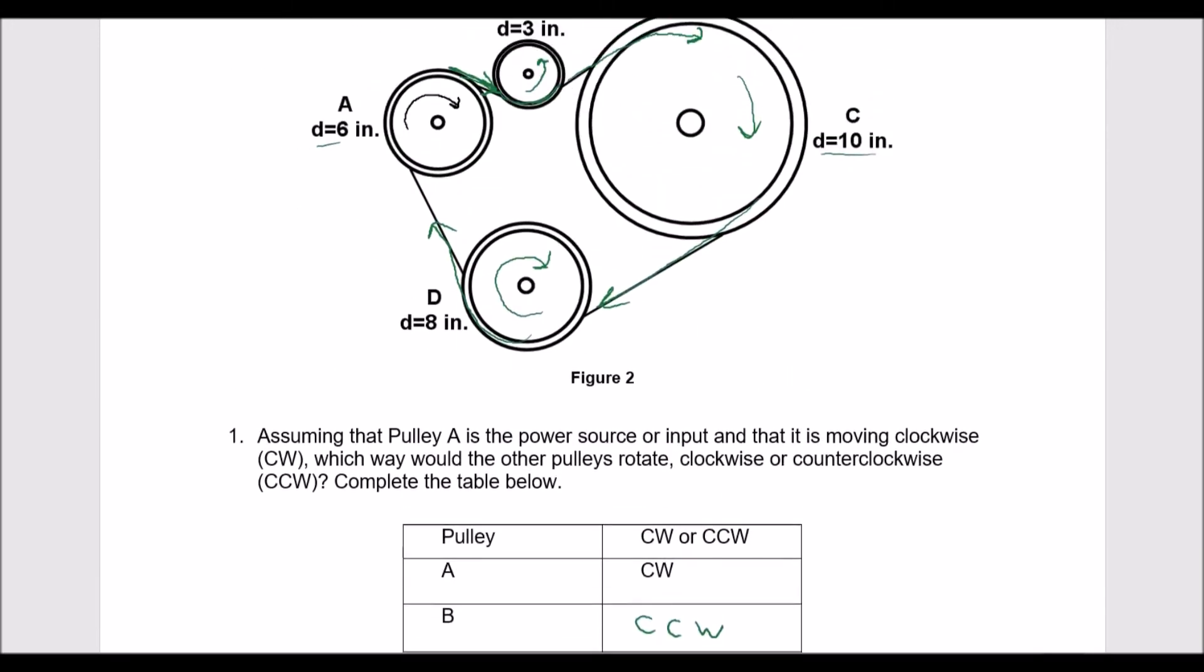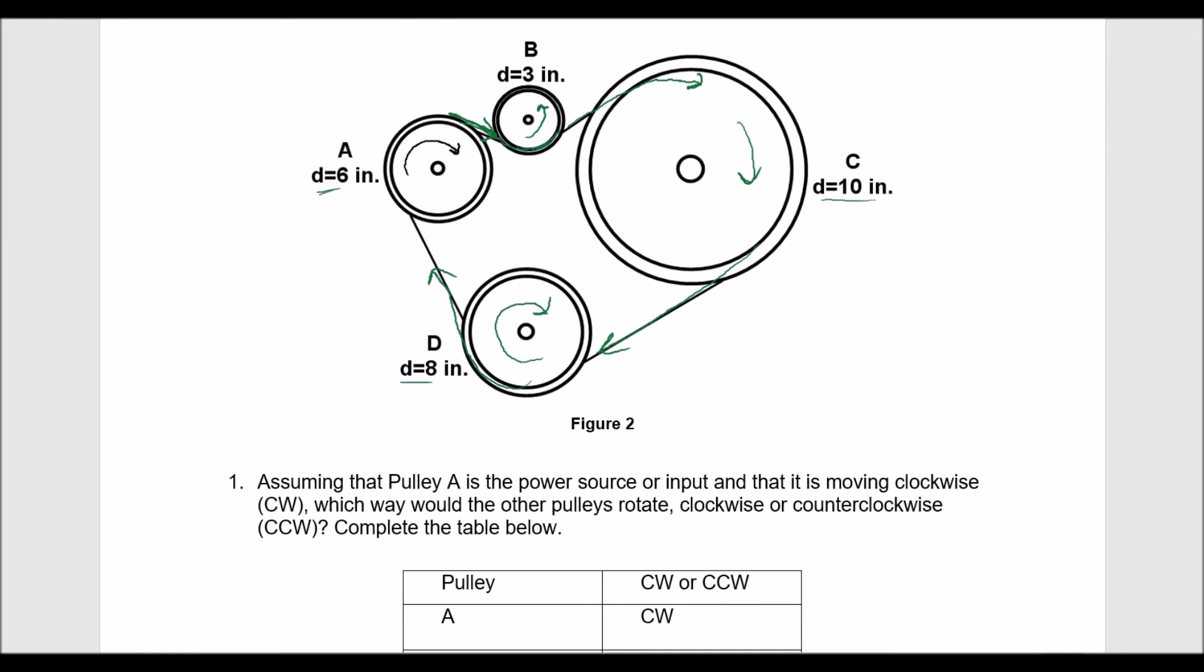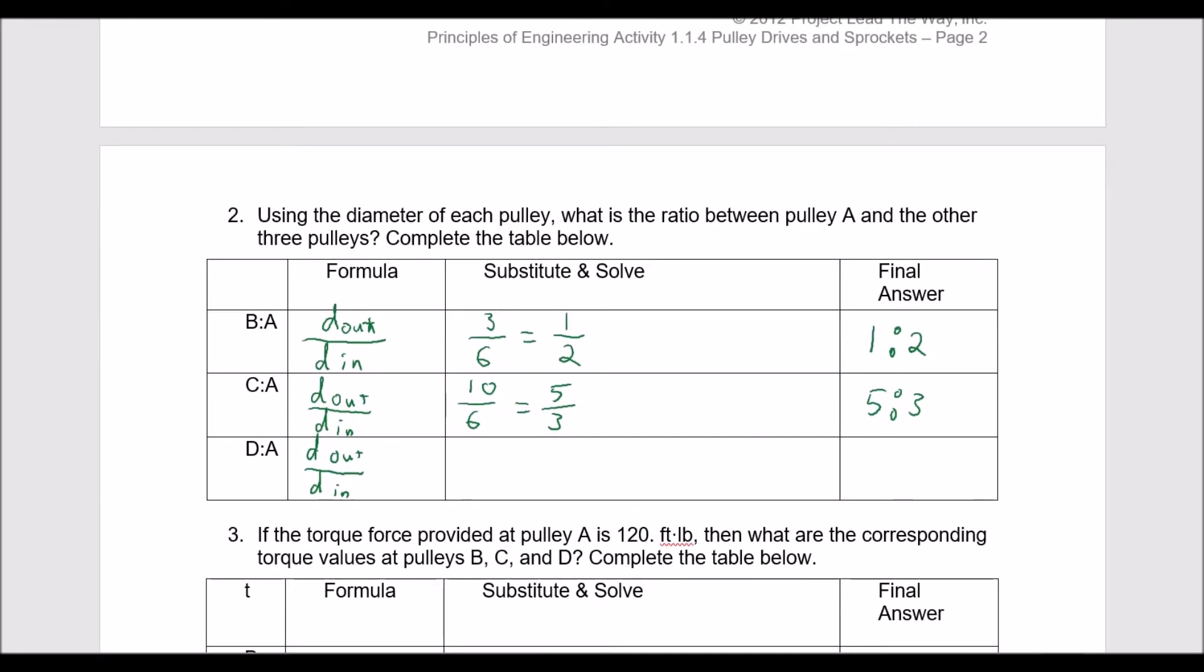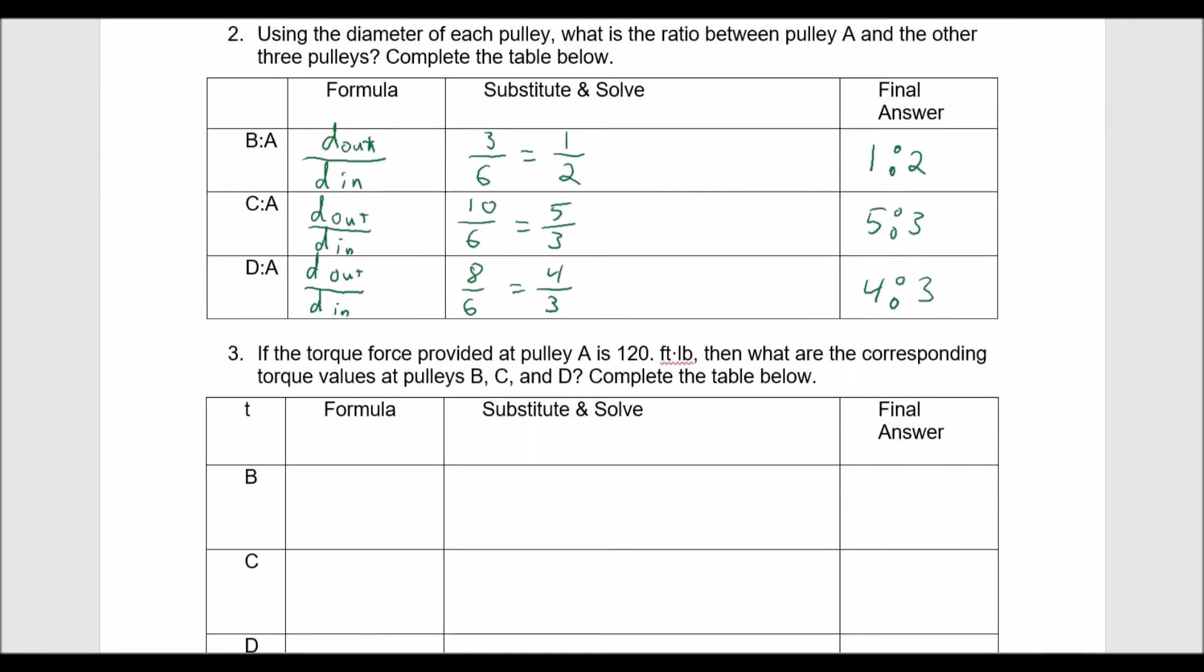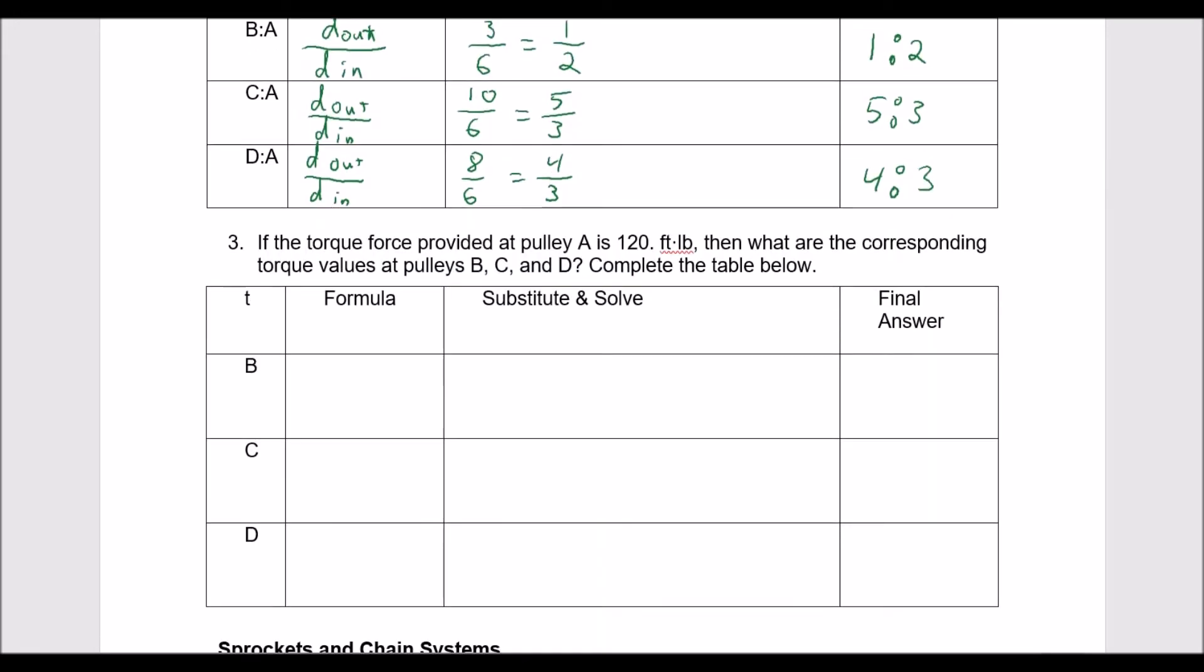And finally D to A, so here's our diameter of 8, we still have our diameter of 6 the original, and so it's going to be 8 divided by 6, and we can reduce that to 4 over 3, which gives us our final answer of 4 to 3. So now we're looking at torque, okay, so now we have some actual forces involved here.